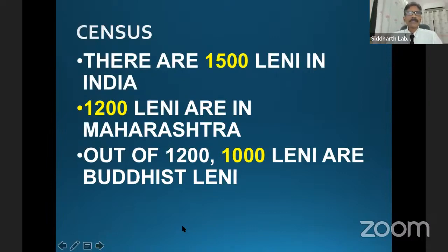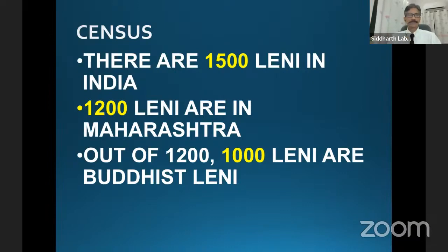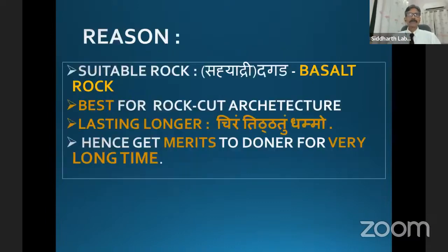The Archaeological Survey of India talks about the census. According to that, there are 1500 Leni in India — those are rock cut architectures. And out of that, 1200 Leni are in Maharashtra. And out of 1200, 1000 Leni are Buddhist Leni. The reason is the basalt rock. That rock is very good for rock cut sculptures — best for architecture. It is lasting longer; the sculptures are lasting longer.